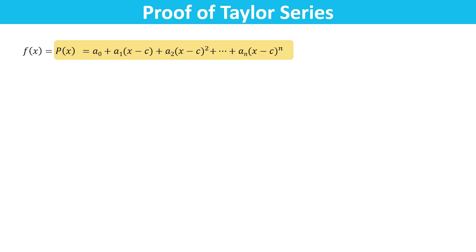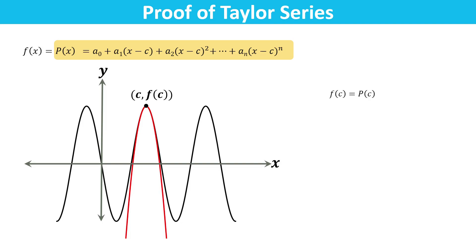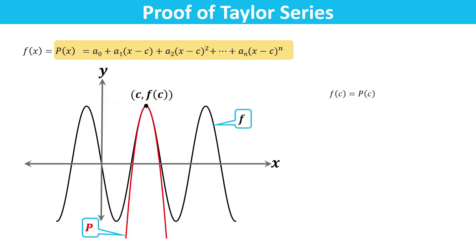If polynomial p of x is our correct approximation of f of x, then we can write f of c equals p of c. Geometrically, it means that the graph of p passes through the point c and f of c. Of course, there are many polynomials whose graph passes through the point c and f of c, but our task is to find a polynomial whose graph resembles the graph of f near the point c and f of c.